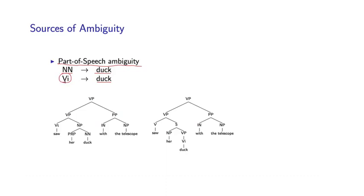These types of part-of-speech ambiguity frequently lead to multiple possible parse structures for a particular sentence. And I've shown you two examples of a verb phrase structure for the string, saw her duck with the telescope, down here.